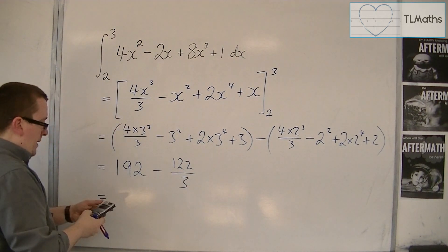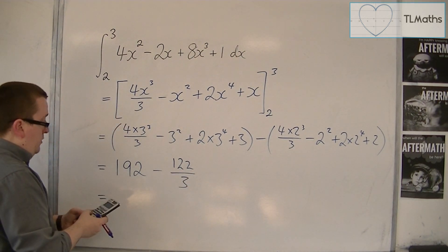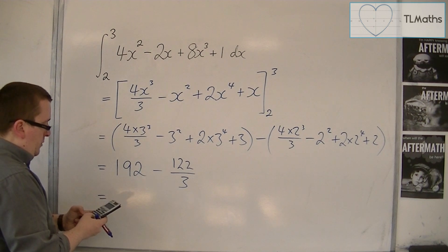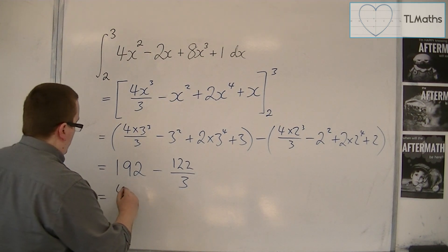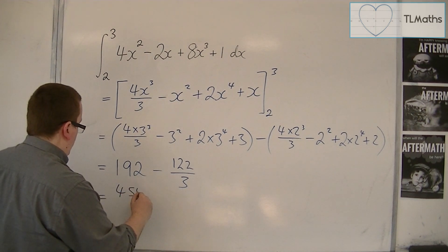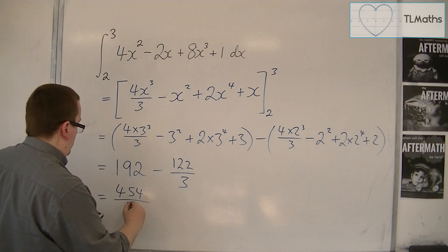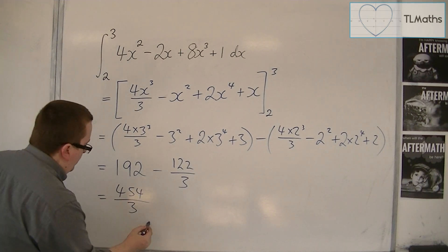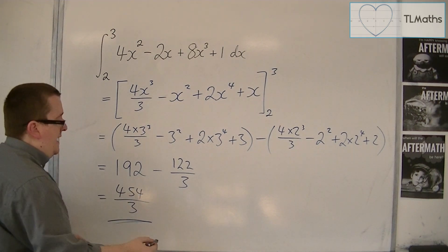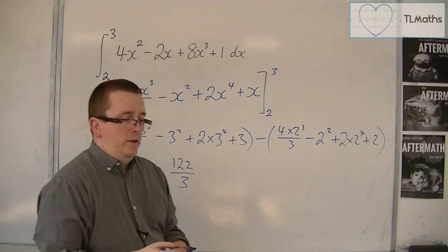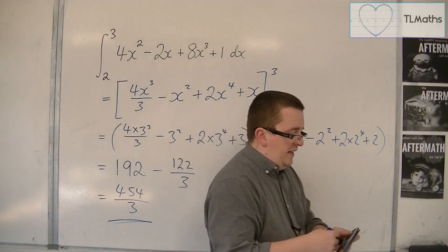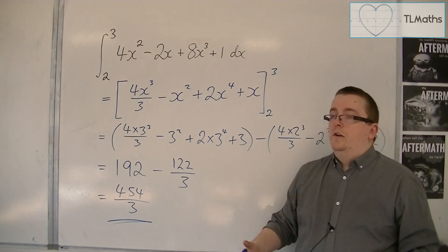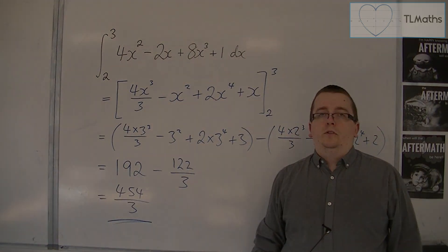So 192 take away 122 over 3 is 454 over 3. And that's the exact area — that's the exact value that I'm looking for.